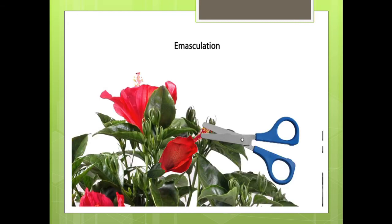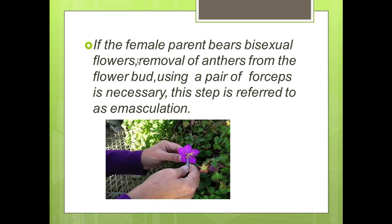The first step is emasculation. If the female parent bears bisexual flowers, then removal of anthers or the male parts from the flower buds using a pair of forceps is necessary. This step is referred to as emasculation — the removal of anthers, or the male part, from a bisexual flower.